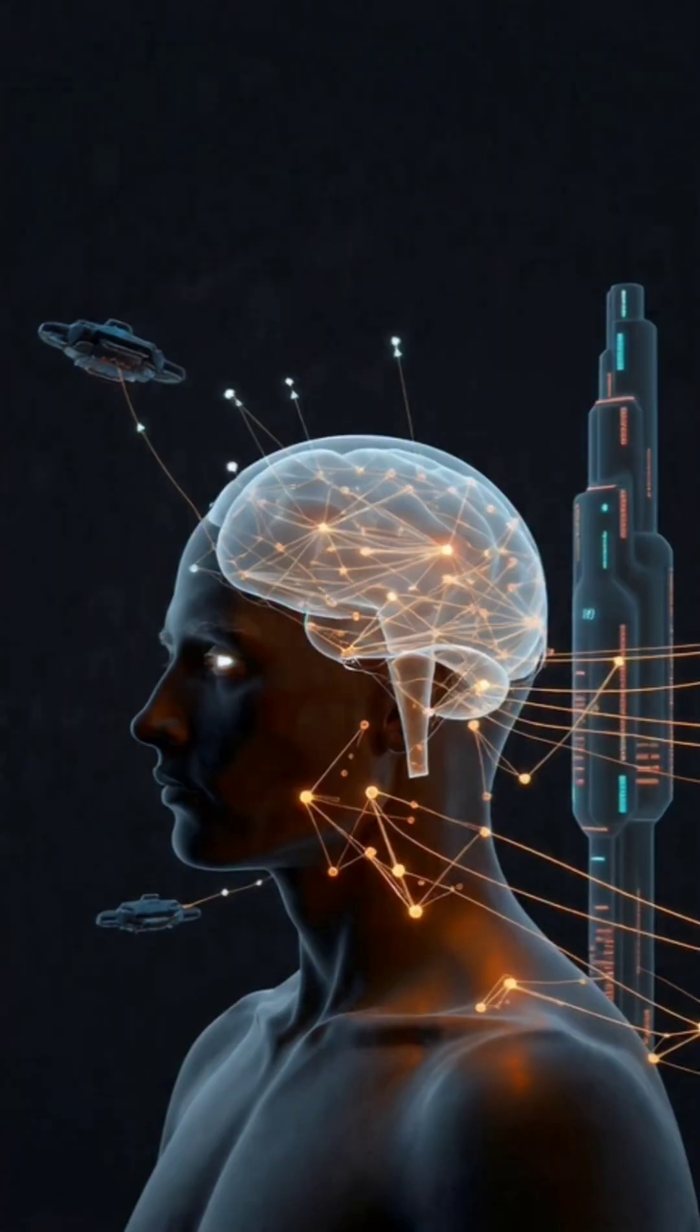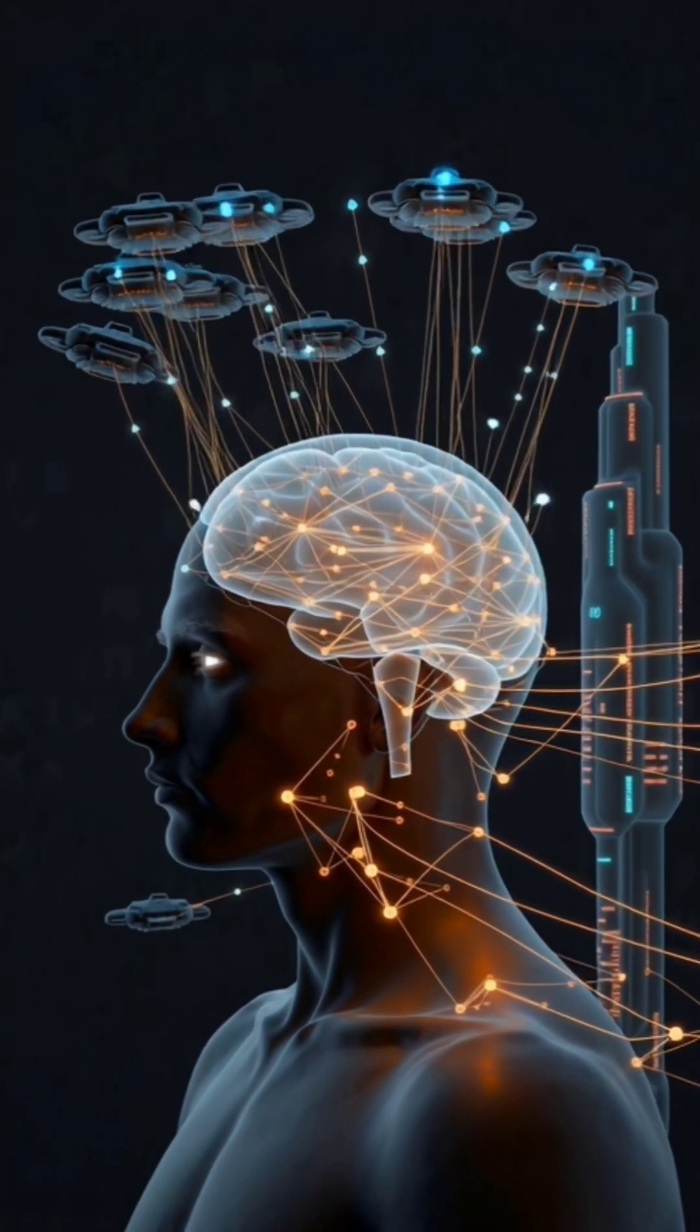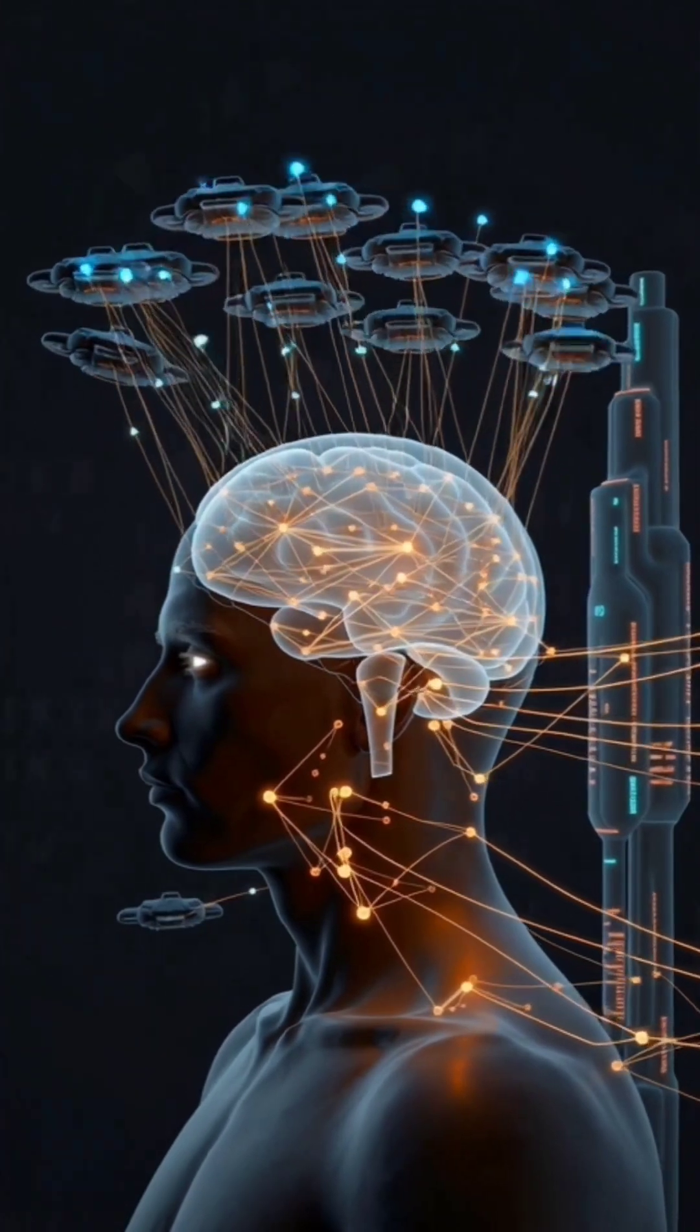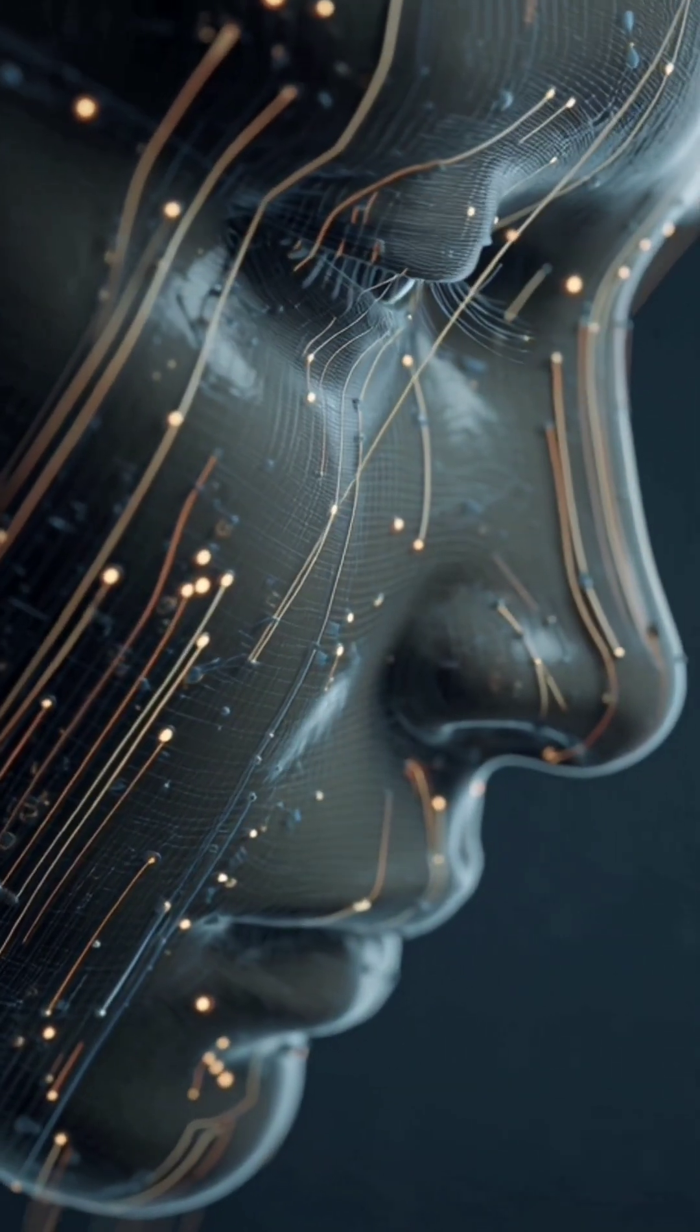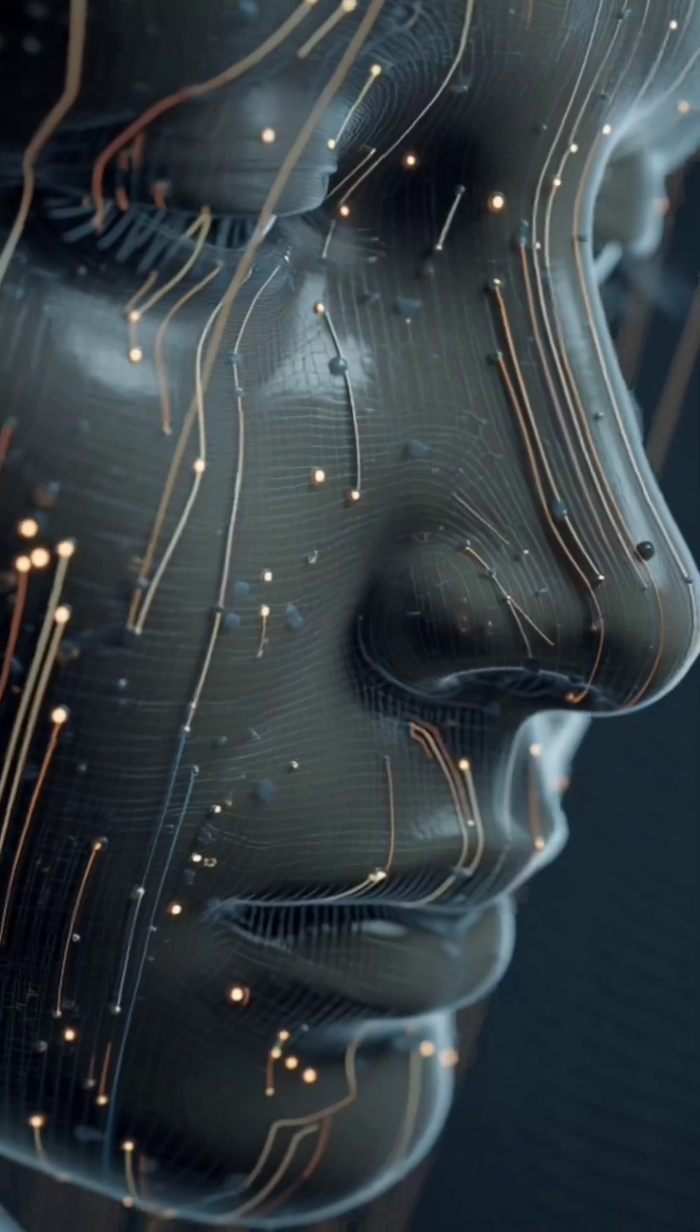First, information comes in through our senses like eyes, ears, skin, nose, and tongue. These senses turn what we see, hear, or feel into signals and send them to the brain.